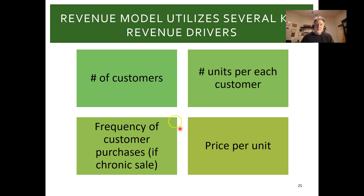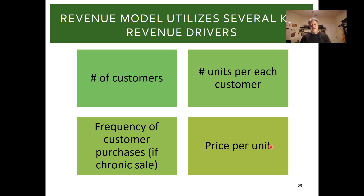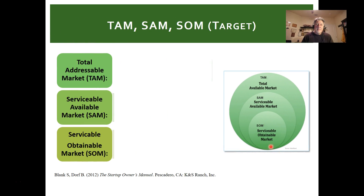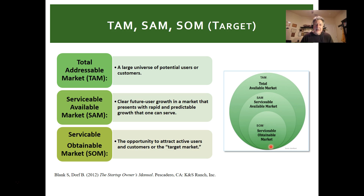Revenue model drivers are: number of customers, units per customer, frequency of purchase, and price per unit — those are the four key drivers to always think about. When building a revenue model, think about TAM, SAM, and SOM — total, serviceable, and obtainable markets. Using transportation as an example, we segmented down to trucks, then the pickup truck market — more addressable and targeted. Bottoms-up is more accurate than top-down.